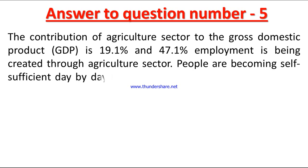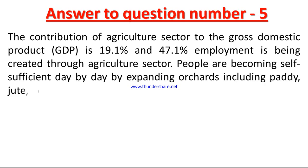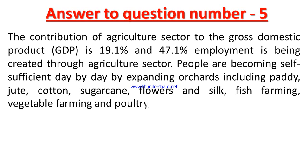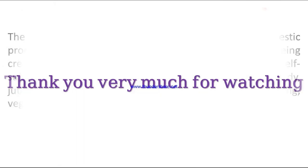47.1 percent of employment is being created through the agriculture sector and people are becoming self-sufficient day by day. By expanding cultivation including paddy, wood, cotton, sugar cane, flowers, fish farming, vegetable farming, and poultry, dairy, and fish farming, the sector continues to grow. Thank you very much for watching, and keep watching for the next video.